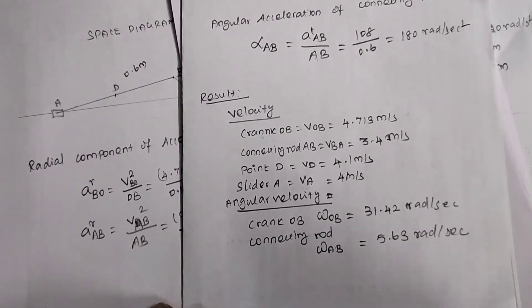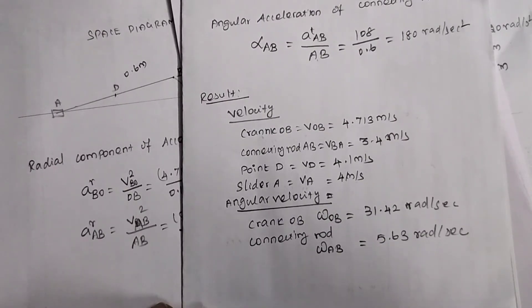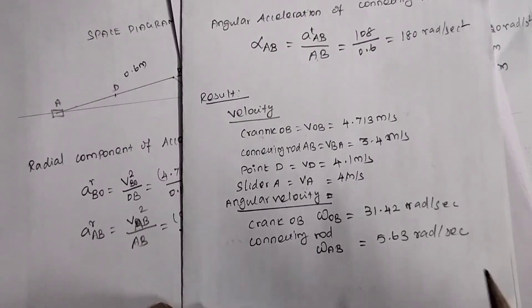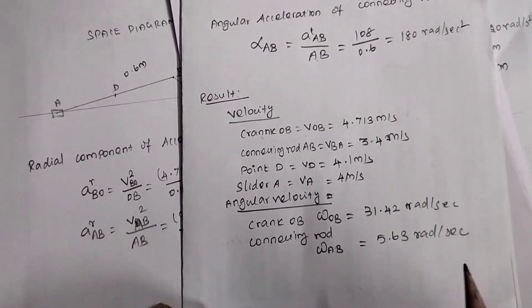The slider undergoes linear motion, so angular velocity does not apply to it. Angular velocity is only defined where rotary motion exists.